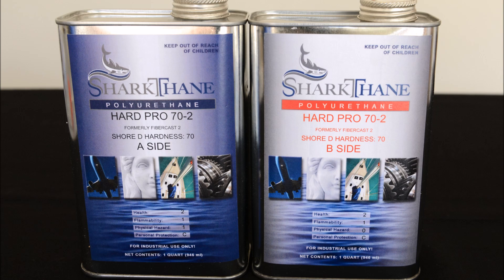We will use Shark Thane Hard Pro 7020, which has a mix ratio of 1 to 1. The shore hardness of the cured material is 70D. This is a hard material. It creates a white cast with almost no air bubbles.